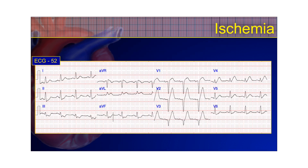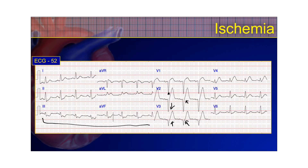Here's another example of hyperacute ischemic T-waves — this is an early anterior wall infarction. You should be able to identify that these T-waves are very tall and symmetrical, not proportionate to the QRS complex they belong to. We do see reciprocal changes in the inferior leads, so this patient would likely become a STEMI. This particular T-wave is what we would call a De Winter T-wave, due to J-point depression in the anterior leads. If you see J-point depression with a big hyperacute T-wave, that's called a De Winter T-wave.